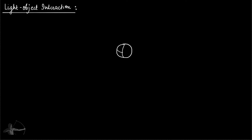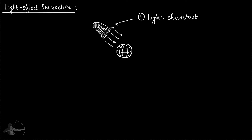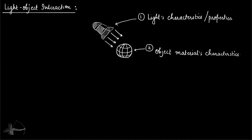Suppose we have a scene in which we have an object and a light. The interaction between the light and the object is based on two different things: one is the light's characteristics or properties, and another is the object's material characteristics. This light-object interaction is called a lighting model. There have been various lighting models developed and used over the years, and one of them is the basic lighting model.